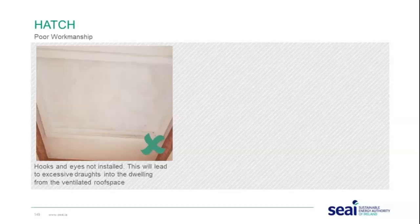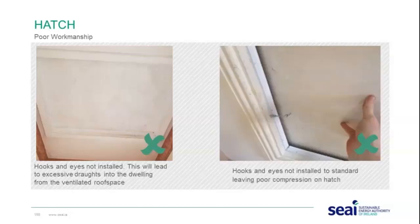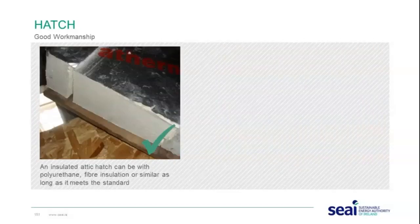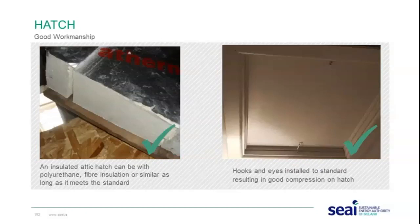Another poor workmanship example is where no hooks and eyes are installed, leading to excessive drafts into the dwelling from the ventilated roof space — especially where extra roof ventilation has been installed. Good compression on the hatch is therefore essential. Good workmanship examples show an insulated hatch in polyurethane, fibre, or similar materials meeting the standards, with hooks and eyes installed to standard resulting in good compression.